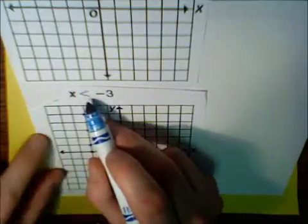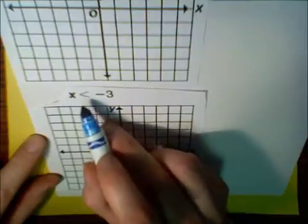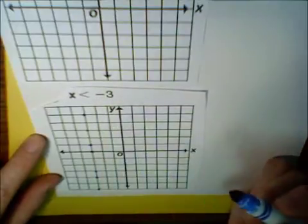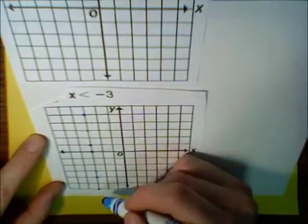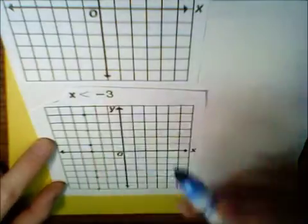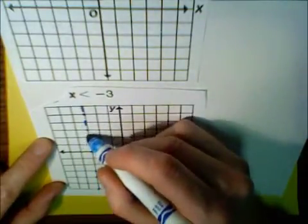But this is an inequality. It says, x is less than negative 3. So, do I do a solid line or a dashed line? Well, there's no equal to sign here. So, I'm going to do a dashed line.